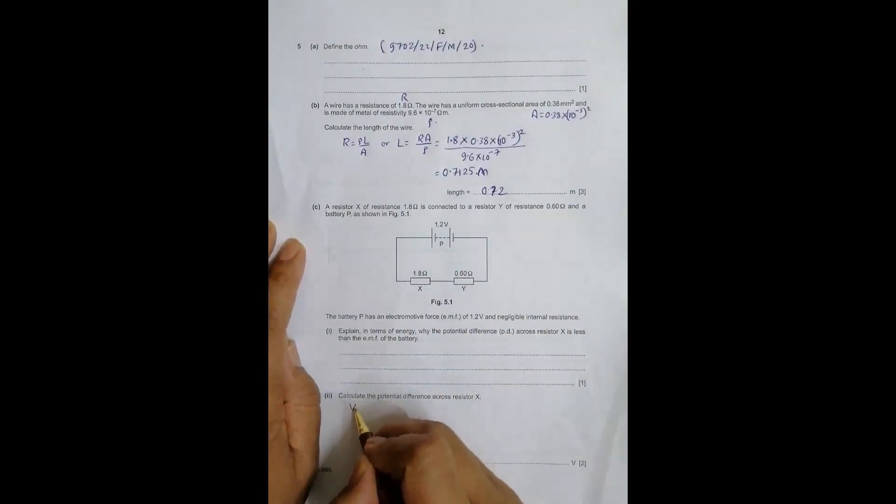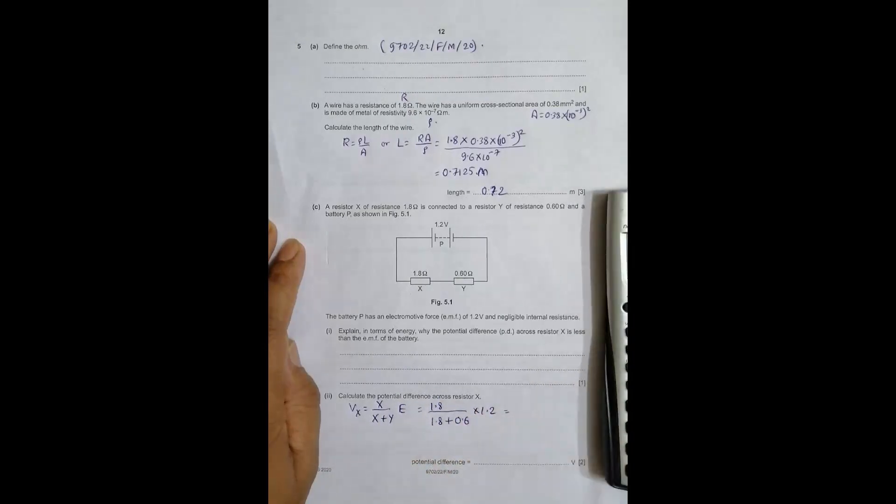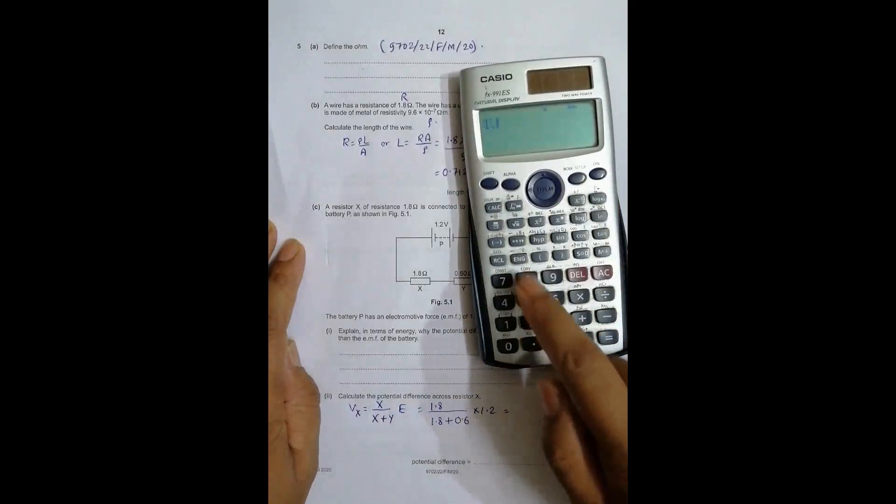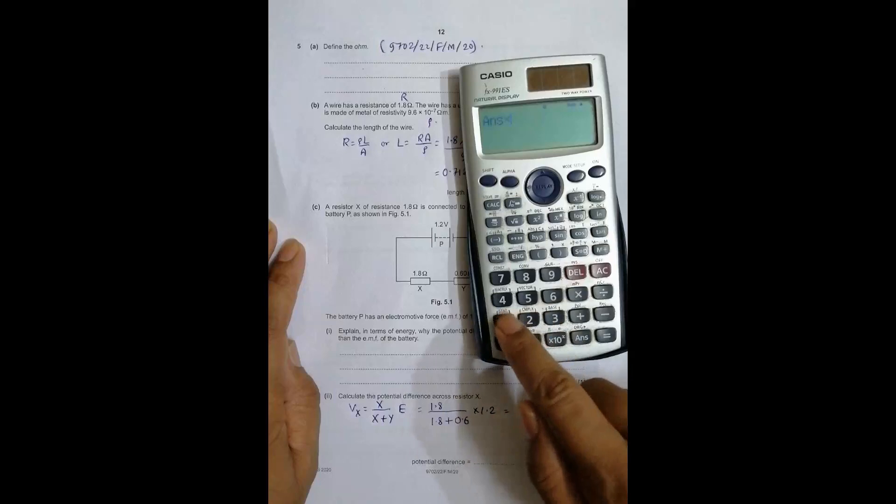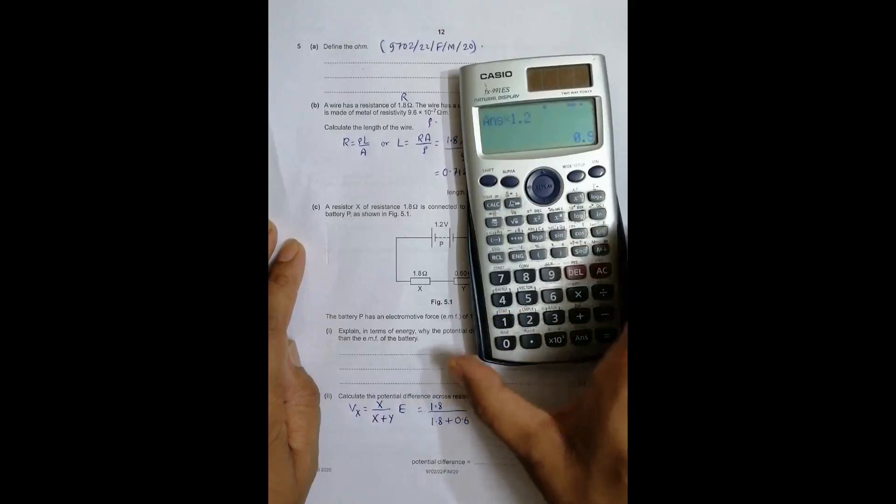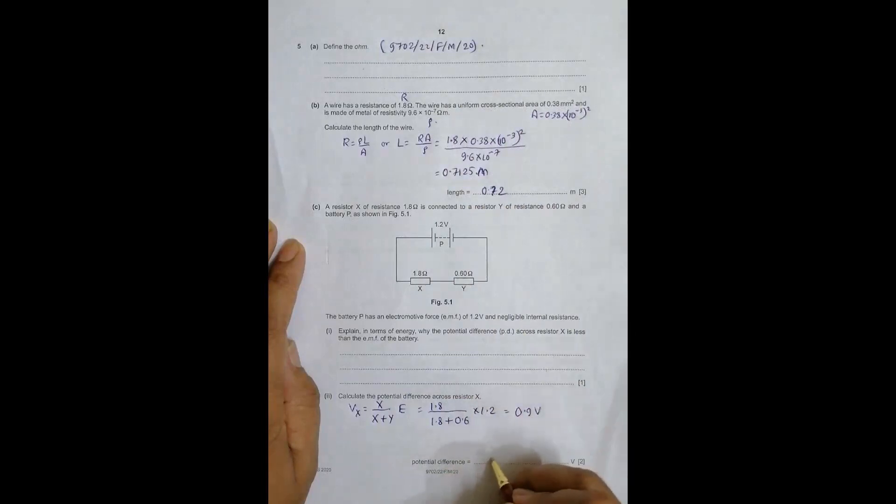The PD across resistor X, VX equals resistance of X divided by resistance of X plus resistance of Y, multiplied by EMF E. So VX = 1.8/(1.8 + 0.6) × 1.2. This is simply the voltage divider principle. VX = 1.8/2.4 × 1.2 = 0.9 volts.